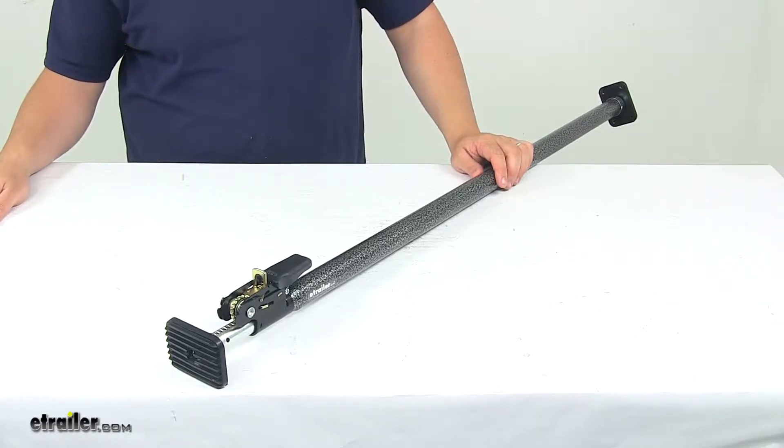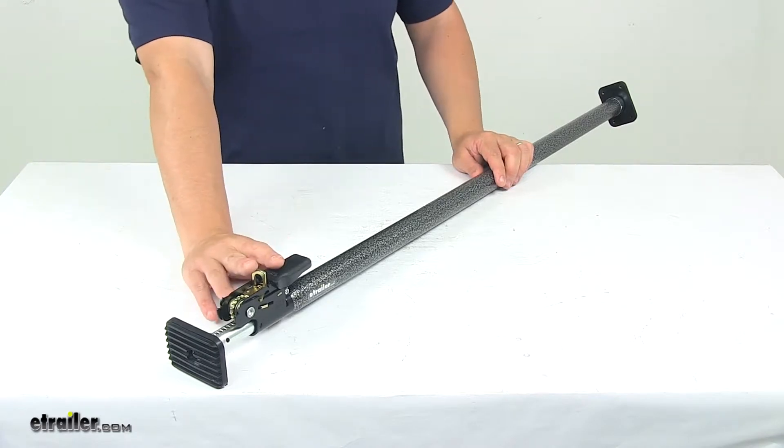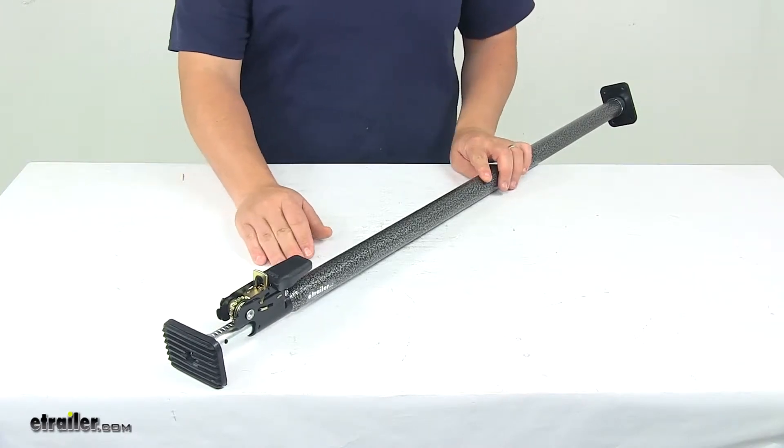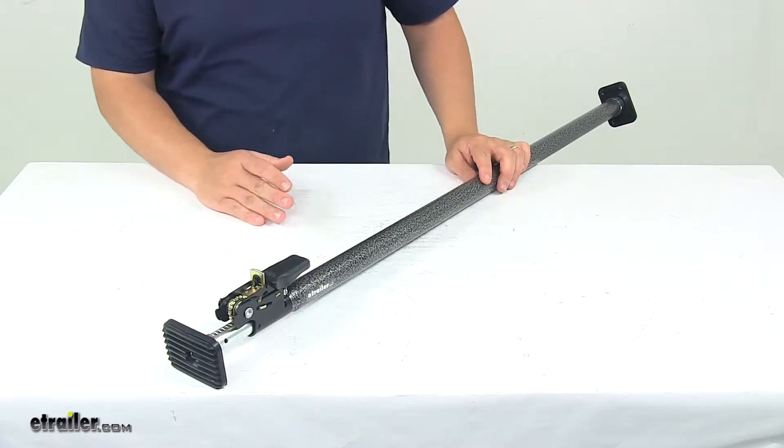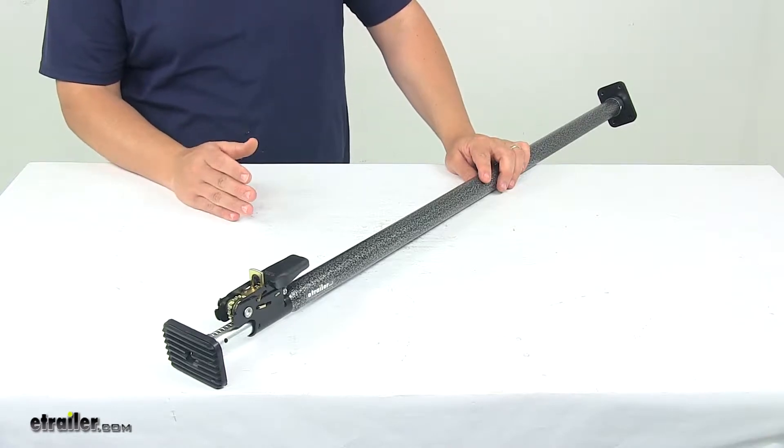Today we're taking a look at a cargo control cargo bar with a ratcheting mechanism. The ratcheting cargo bar stops cargo from shifting in your truck bed, in your van, or in your SUV.